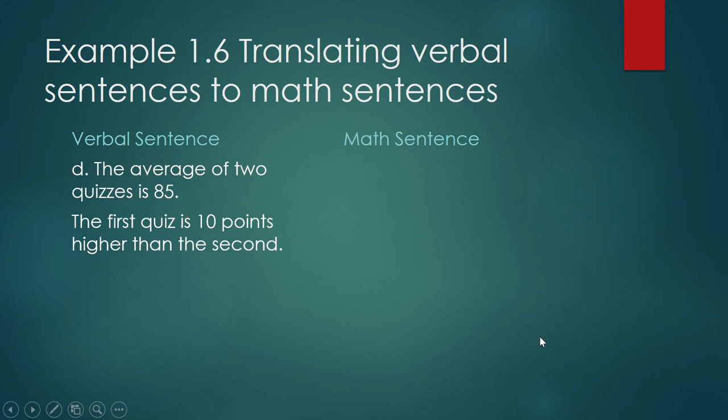So by now, you should be familiar with how averages are computed. So that is just basically, since we have two quizzes, that is just basically x plus y over 2 is equal to 85. That is how you compute for the average of two numbers.